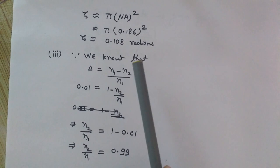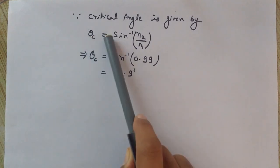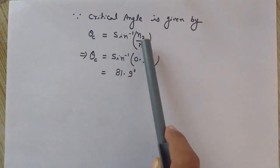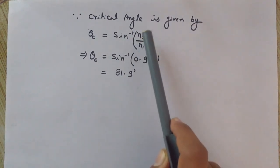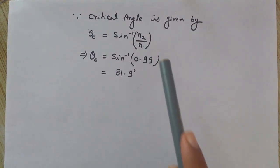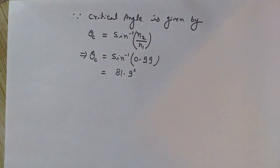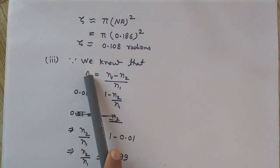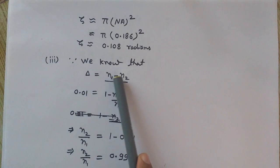The third value to calculate is the critical angle. The critical angle θc is given by θc = sin⁻¹(n2/n1), where n2 is the refractive index of the cladding and n1 is the refractive index of the core. We need the ratio n2/n1. From the given information, delta equals (n1 − n2)/n1, which equals 1 − n2/n1. Since delta is 0.01, we can simplify this expression to find the n2/n1 ratio.